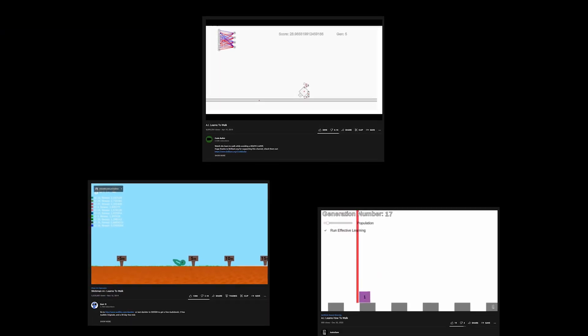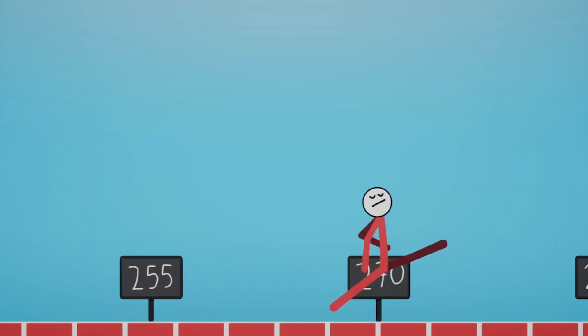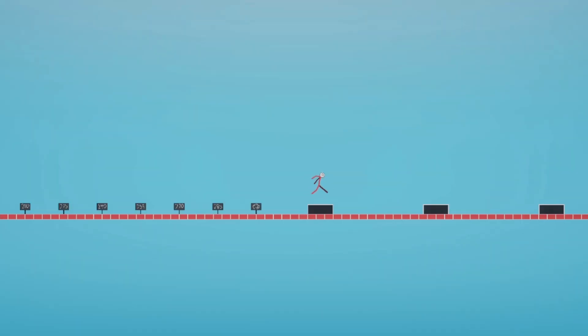I've seen many videos with AIs learning to walk before, but I wanted to make it a little bit different for this video. So I'm going to train this AI to be able to complete this obstacle course here.